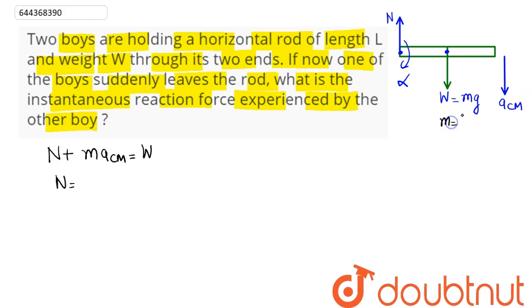So the normal reaction here comes as, in terms of weight, this M can be written as W/G. So this comes as W - (W/G)*ACM. So here, to calculate the value of normal reaction, we need to find the value of acceleration of the center of mass.